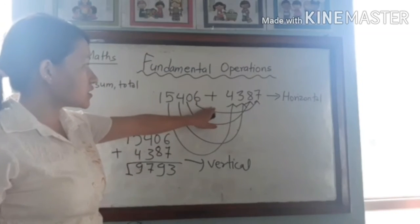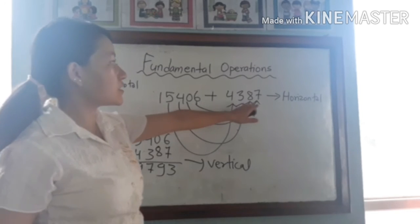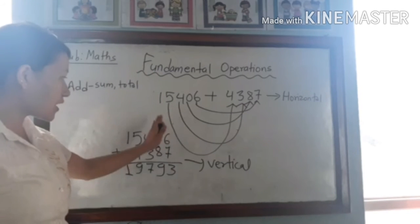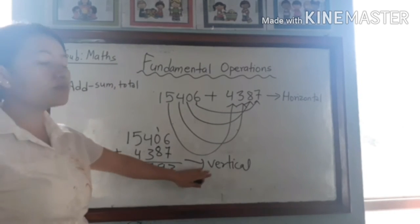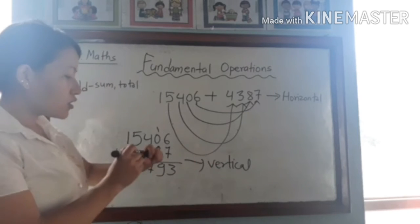If we are doing addition in this way, it is called horizontal. And if we are arranging the given number in this way, then it is called vertical order.